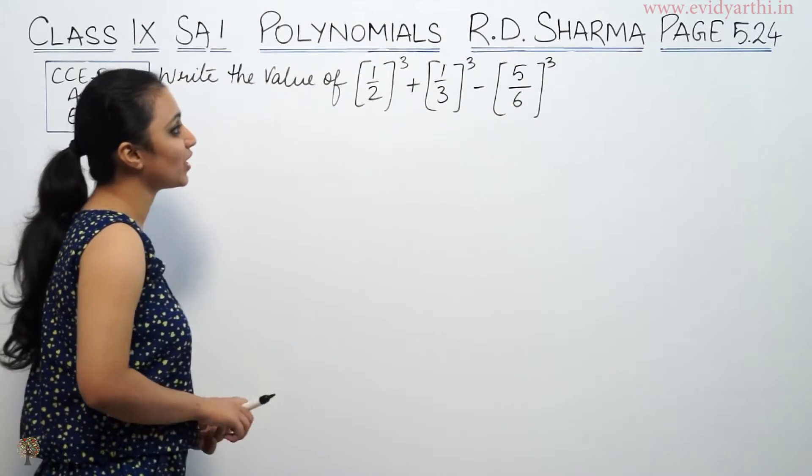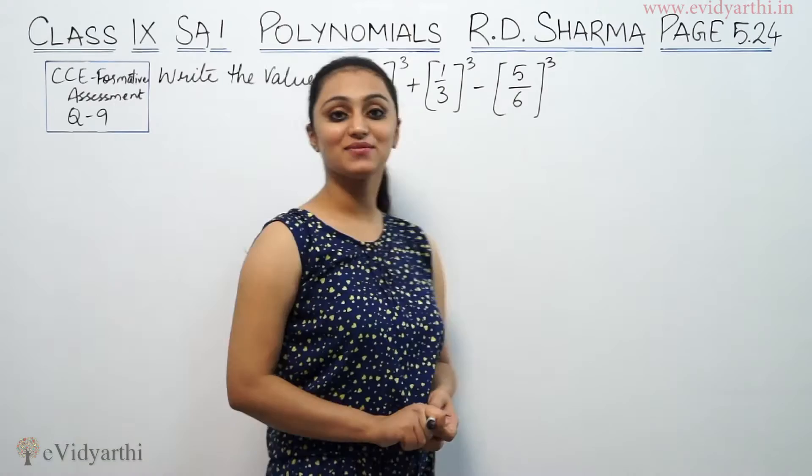This says, find the value of (1/2)³ + (1/3)³ - (5/6)³.